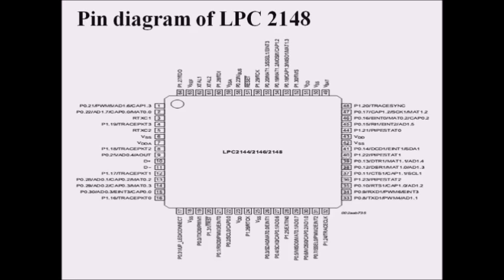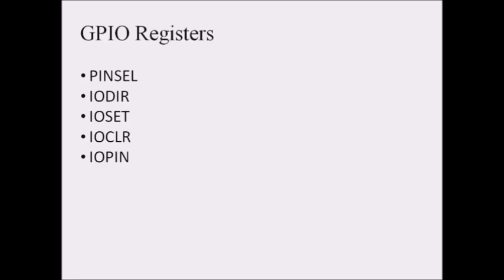Coming to how we use these port pins as general purpose input output pins, we need some registers for activation. Coming to the registers — for making the 48 pins as general purpose input output pins, we will look at the next slides. These are the general purpose input output registers. The first one is the PINSEL register, which is used for selecting the particular pins.